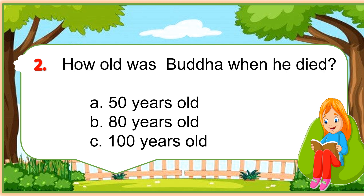Number 2 question: How old was Buddha when he died? A. 50 years old. B. 80 years old. C. 100 years old. What's the correct answer?